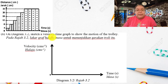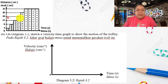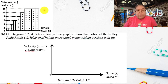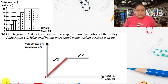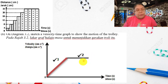Sketch the V-T graph to show the motion of the trolley. The V-T graph is the same as what we described: velocity increases at first then becomes constant. When drawing, you must draw two parts to get two marks — velocity up, then after that constant.